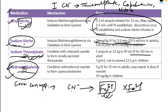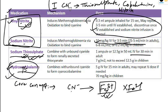For cyanide poisoning, we require mainly three compounds — both nitrite formulations are the same compound in different forms. Remember the mnemonic: treat cyanide poisoning — T for thiosulfate, C for cobalamin, N for nitrite. These are the compounds used for cyanide poisoning.